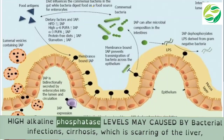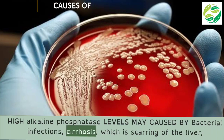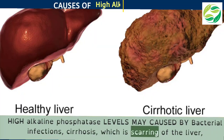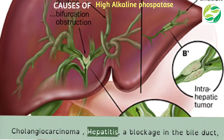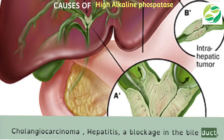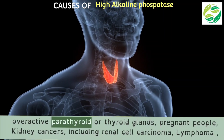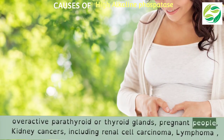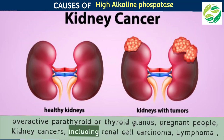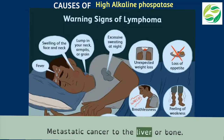High alkaline phosphatase levels may be caused by bacterial infections, cirrhosis (scarring of the liver), cholangiocarcinoma, hepatitis, a blockage in the bile duct, overactive parathyroid or thyroid glands, pregnancy, kidney cancers including renal cell carcinoma, lymphoma, and metastatic cancer to the liver or bone.